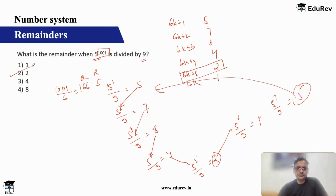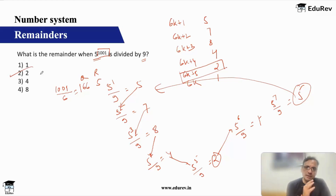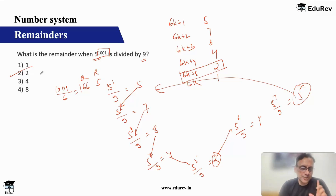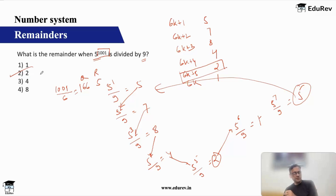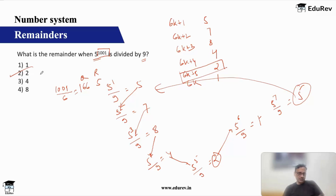So this is a very simple method — cyclicity — the most basic method to calculate remainders, provided your dividend and divisor are small numbers, preferably single digits. So I hope we are clear with this first method of cyclicity. Though we discussed a lot of methods earlier — binomial, a^n minus b^n, a^n plus b^n, HCF and LCM models — those are basic concepts. Now we are coming to the core formulas, and the first is cyclicity.